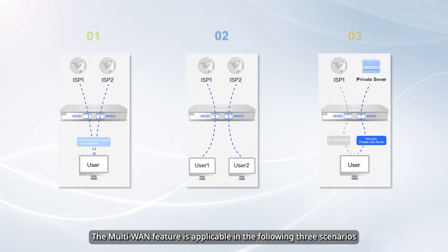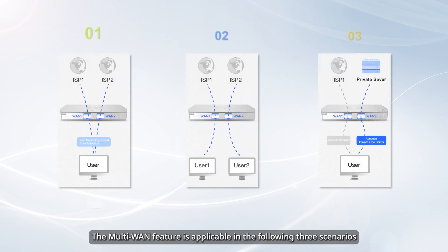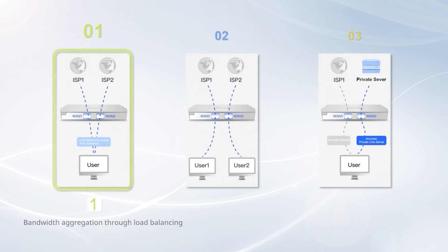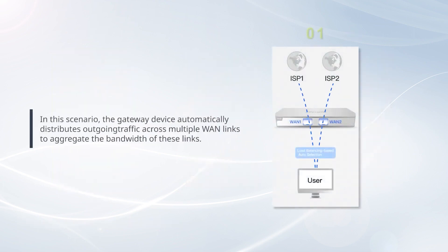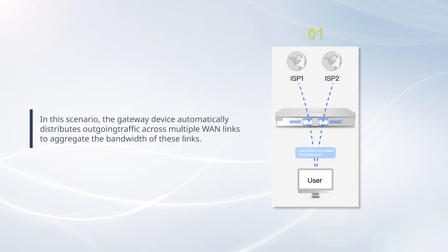The multi-WAN feature is applicable in the following three scenarios. Scenario 1: Bandwidth aggregation through load balancing. In this scenario, the gateway device automatically distributes outgoing traffic across multiple WAN links to aggregate the bandwidth of these links.